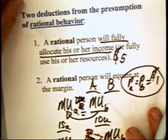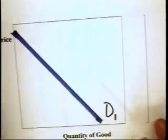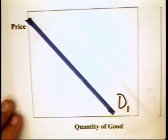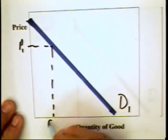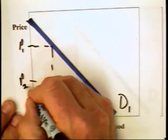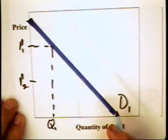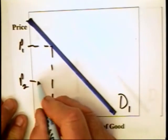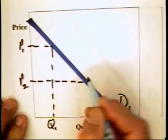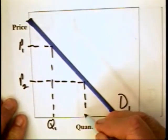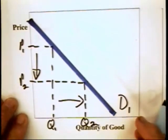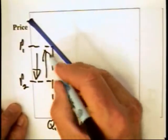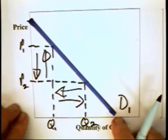We have captured the Law of Demand in a graph. Starting at price P1, consumers will buy quantity Q1. If you lower the price of this good, you upset the equality of the marginal utility ratios. People will move from other goods into the consumption of this good, and the result is: the price goes down, the quantity demanded goes up. Conversely, the price goes up and the quantity demanded goes down.